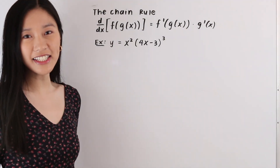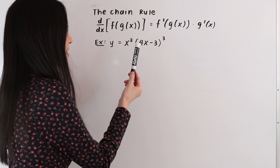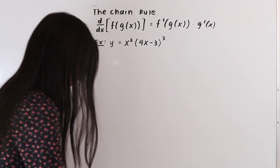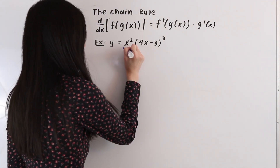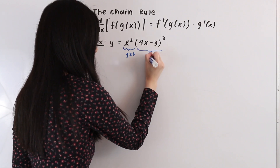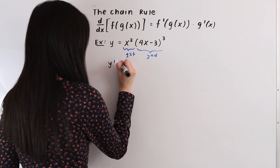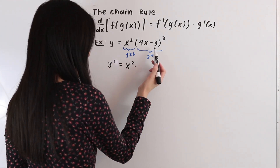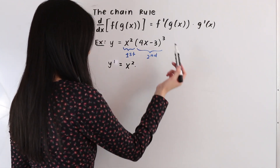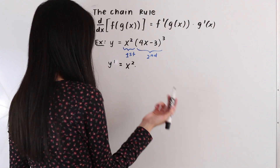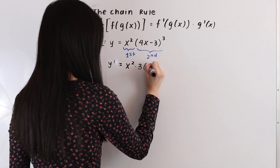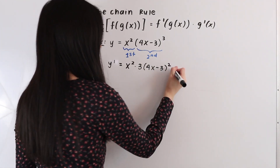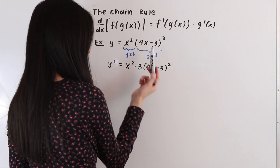In this last example, we have the function y is equal to x squared times the quantity 4x minus 3 cubed. We have a product of two functions, so we need to use the product rule. The first function is x squared and the second function is the quantity 4x minus 3 cubed. y prime equals the first function x squared times the derivative of the second function. Since the second function is composite, we use the chain rule: bring down the 3, keep 4x minus 3 the same, subtract 1 from the exponent to get squared, then multiply by the derivative of 4x minus 3, which is 4.